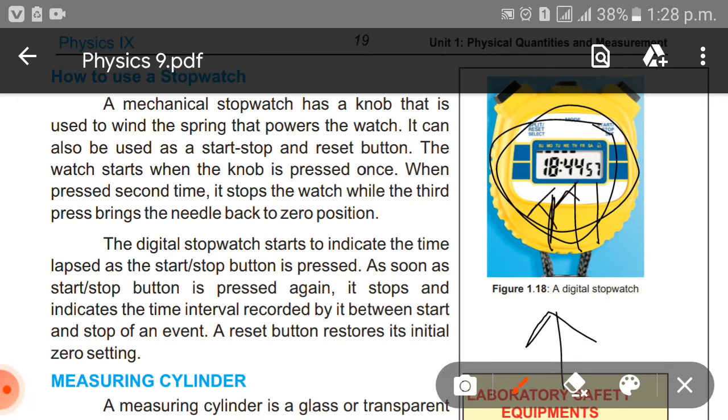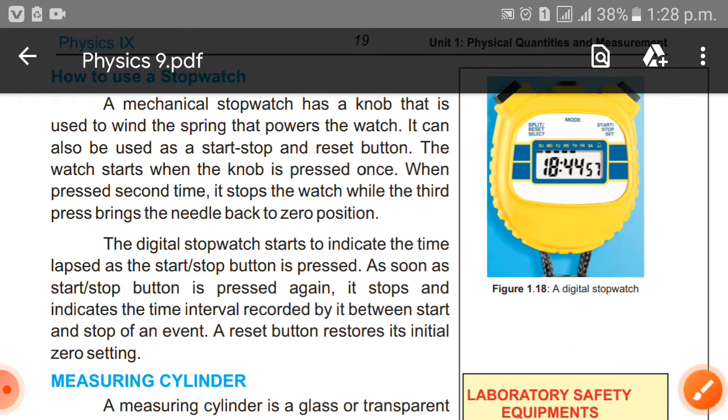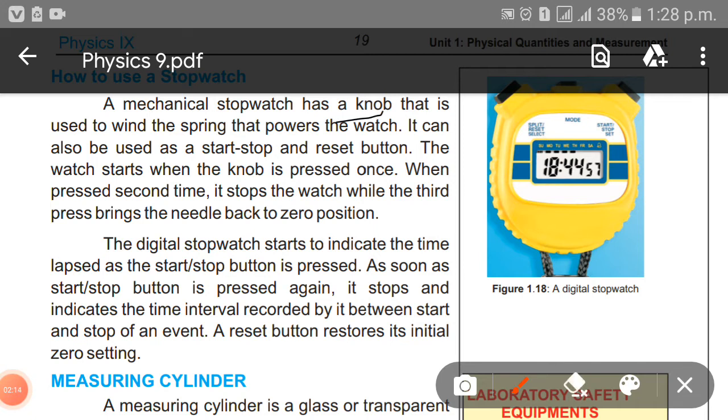A mechanical stopwatch has a knob that is used to wind the spring that powers the watch. It can also be used as a start-stop and reset button. The watch starts when the knob is pressed once.